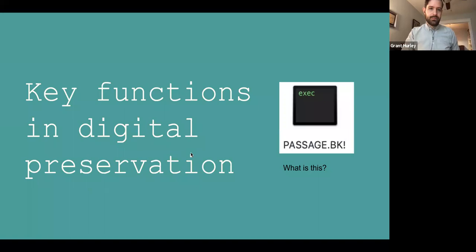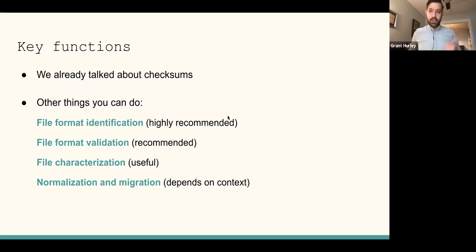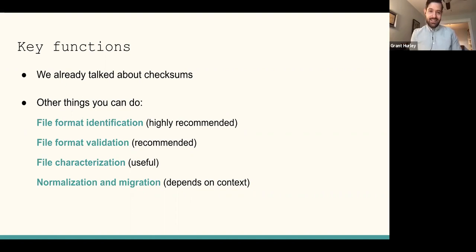Up next, we're going to talk about key functions in digital preservation — the nitty-gritty of what preservation workflows actually do and look like. Checksums are really core to this and we already talked about them. These are some other things that most preservation processing systems will do and that you should do if you're developing your own preservation workflow. File format identification is the first one — highly recommended, probably the number one thing you should do. File format validation is second — recommended but not required. We'll also talk about additional characterization, which is useful but depends on the materials at hand, and then normalization and migration, which again depends on context.